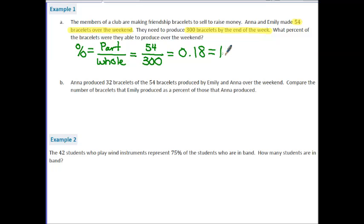Part B, it says Anna produced 32 bracelets of the 54 bracelets produced by Emily and Anna over the weekend. Compare the number of bracelets that Emily produced as a percent of those that Anna produced. I'm going to highlight some important information here. It says that we want to compare the number of bracelets that Emily produced as a percent of those that Anna produced. So we're not really looking at part and whole in this scenario. What I'm really looking for in the percentage is comparing the two elements. So you're really creating a ratio of these two. What we're going to put on the top is the number that Emily produced, because they mentioned that as being the percent of those that Anna produced. So Emily's bracelets will go on the top and Anna's will go on the bottom.